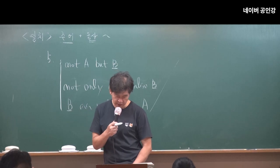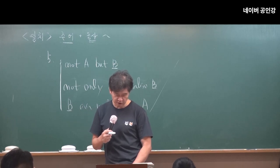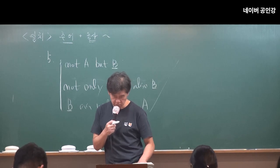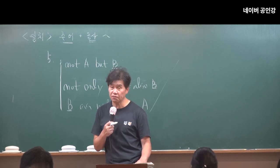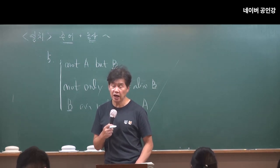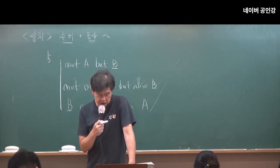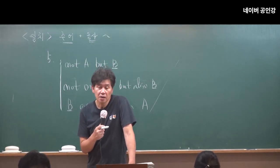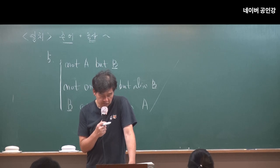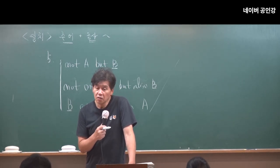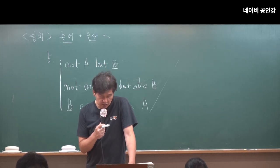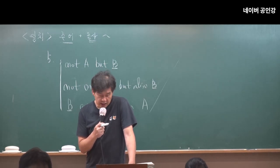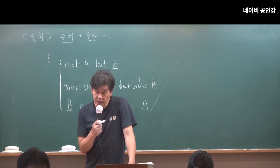문제 확인. 1번 문제, 2번 답 어때? I don't know you, but your friend — your friend에다 맞춰야 되지 않아? 그러니까 is가 아니라 뭐야? 3번 답도 해봐. 2의 A와 B는 동사에 가까운 쪽으로, 그렇지? 동사에 가까운 건 I 아니야, I. I am — am이 돼야지. I am.